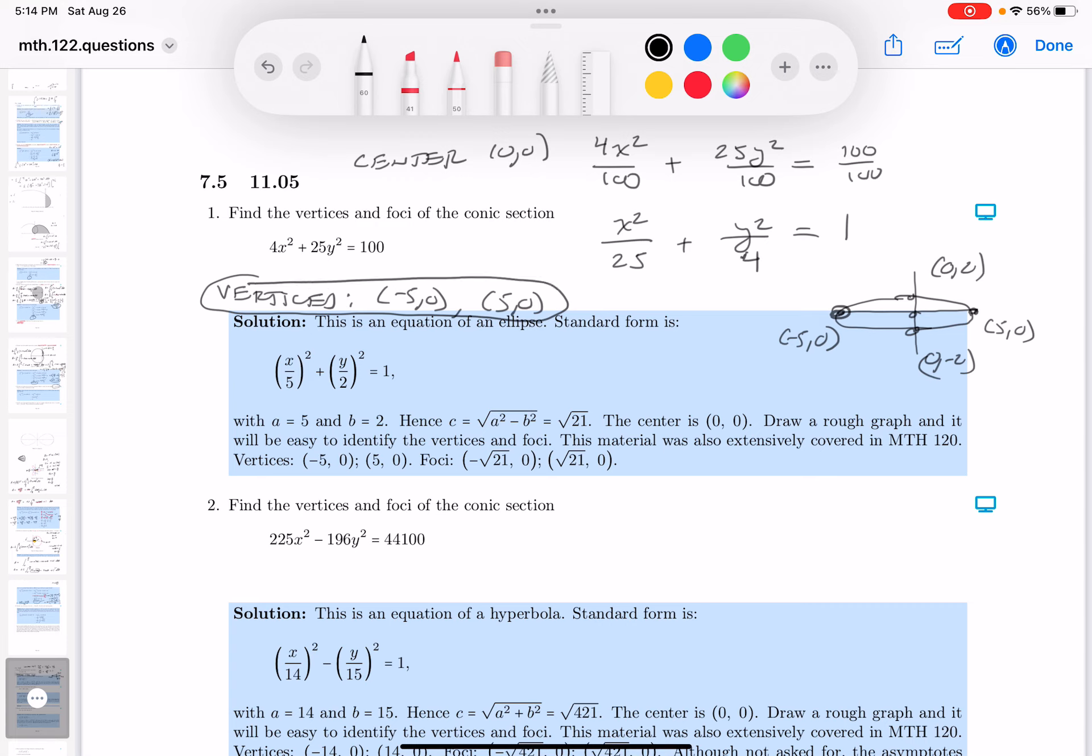The other thing is the foci. And the foci are going to be a certain distance in from the center. How do I compute that distance? I take the difference between these two numbers, which is 21, and take a square root. So the distance in from the center, I'll call it c, is going to be the root of 21.